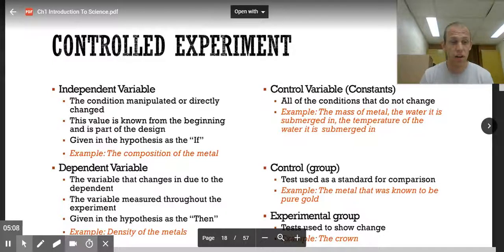The dependent variable is the variable that changes. It's measured during the experiment. It's given in the then part. So our example, it's the density of metals. That's the thing that we're actually going to calculate by putting in and submerging these things in water.